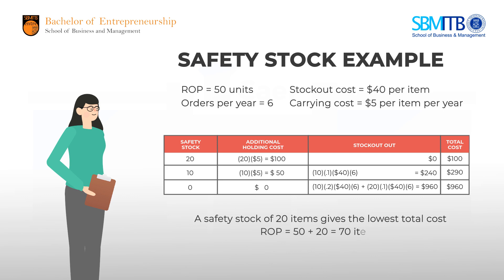This safety stock will change the reorder point from 50 units to 70 units. So Linda needs 70 items to avoid stockouts.